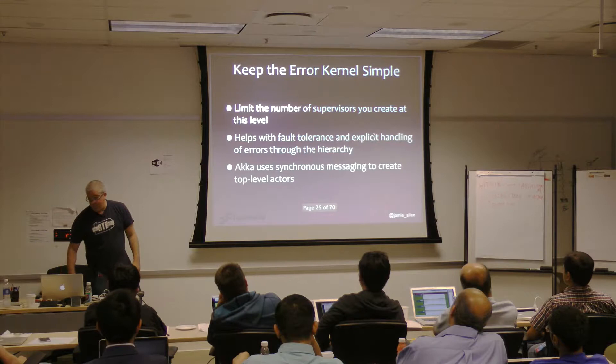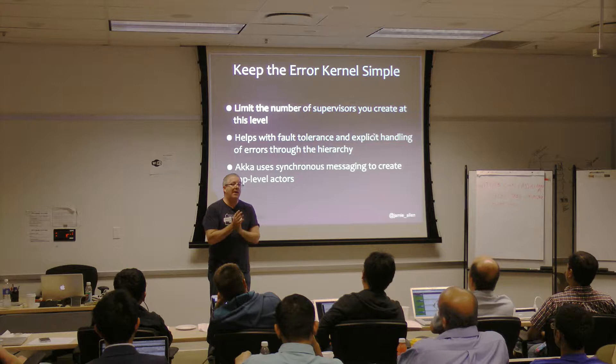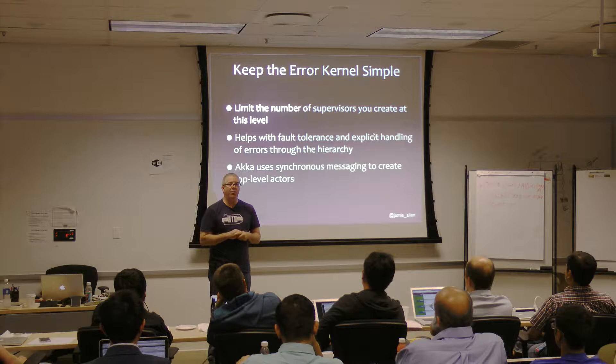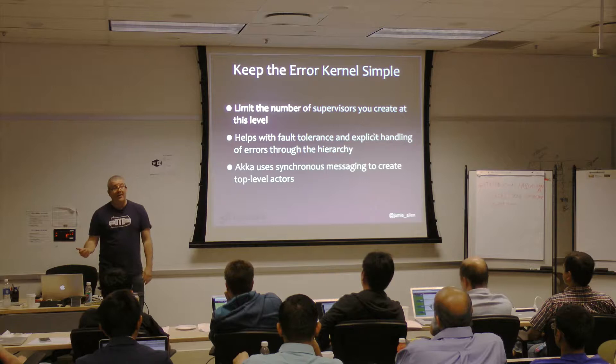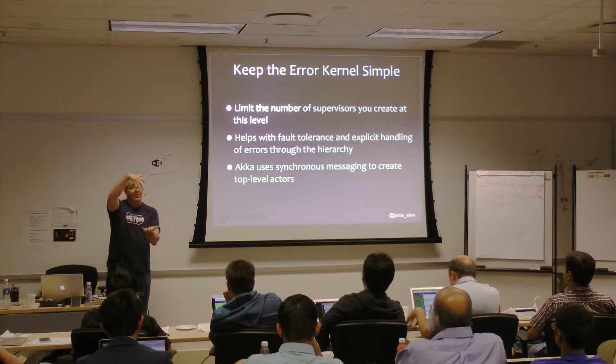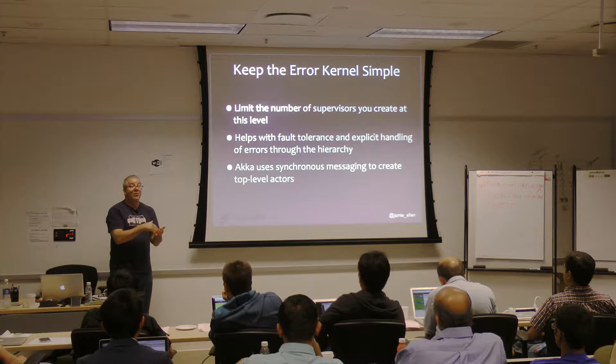Keep your error kernel simple. The error kernel is the top level of your actor systems — the very root nodes. We don't want them doing a lot of work. Distribute work downward through supervisor hierarchies in atomic chunks. This helps with fault tolerance: by building up a hierarchy of how to handle failure upward, you can be very explicit about what failure needs to be elevated.